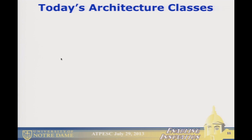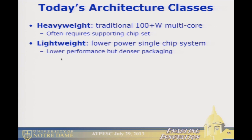Looking at architecture classes: for the Exascale report in 2008, we identified two classes. Heavyweights were traditional Xeons with as many cores as you could fit, running as fast as possible with as big a heat sink as you could put on. Lightweights were things like Blue Gene, where you slowed it down, threw out functionality, and aimed to package something where you could put a lot of them in a volume.